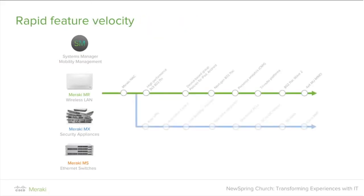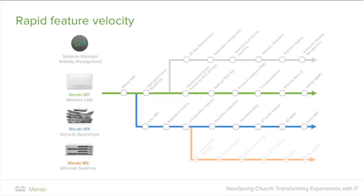We're also well known for feature velocity — our engineers continually look at market dynamics and customer feedback to stay on top of real-world features. These are just some examples; we'd need a much bigger page to list them all. When you make a decision to go with Meraki, you're buying a product whose capabilities will increase over the duration of your relationship with us, because we're constantly coming up with new ways to use this technology to make your life easier.